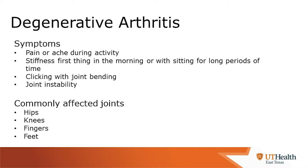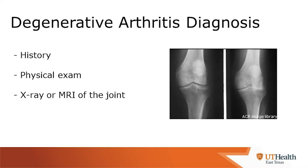Commonly affected joints include the hips, knees, fingers, and feet. Degenerative arthritis can be diagnosed in multiple ways. Typically we can get a good history from a patient and determine pretty quickly that this is likely degenerative arthritis. We can supplement this suspicion with physical exam findings and then order x-rays and MRIs of the joint to see the extent of degenerative arthritis.